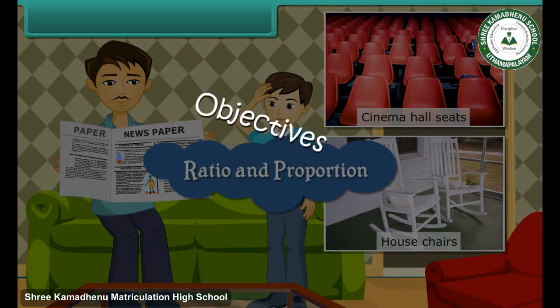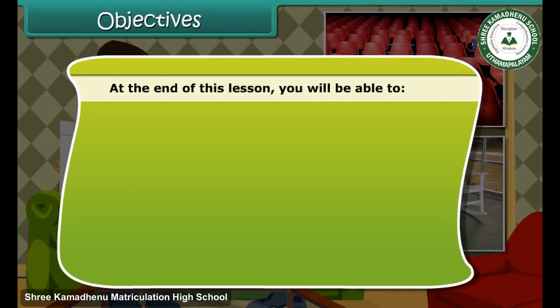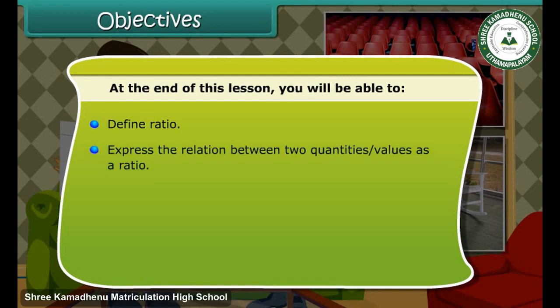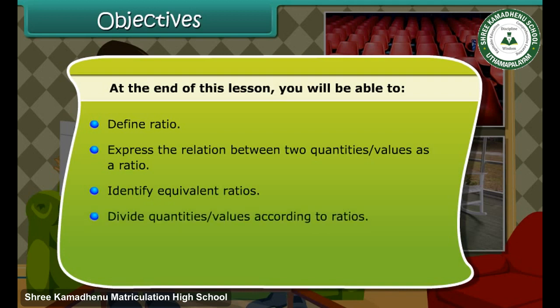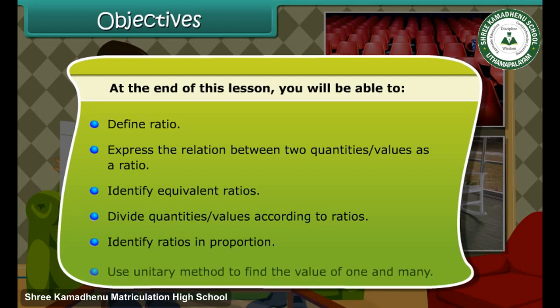At the end of this lesson, you will be able to: define ratio; express the relation between two quantities as a ratio; identify equivalent ratios; divide quantities and values according to ratios; identify ratios in proportion; and use the unitary method to find the value of one and many.